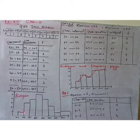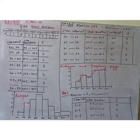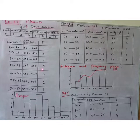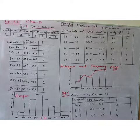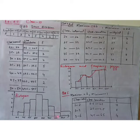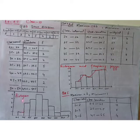The next adjacent bar is for frequency 3, then the next bar for frequency 4, and then for frequency 5 corresponding to interval 34.5 to 39.5. Next bar is for frequency 4, and similarly up to the last interval 49.5 to 54.5, where the corresponding frequency is 1. These adjacent blocks together represent our histogram.